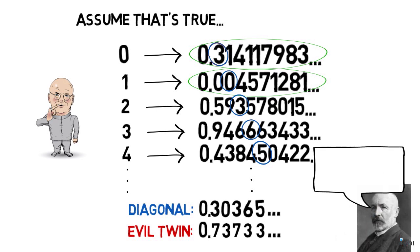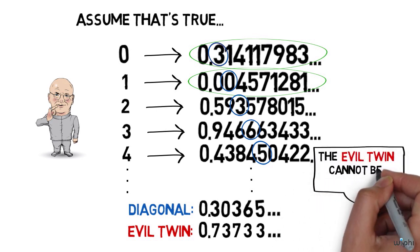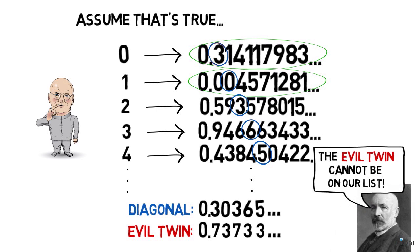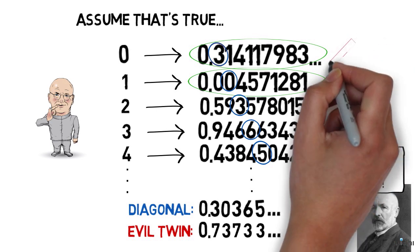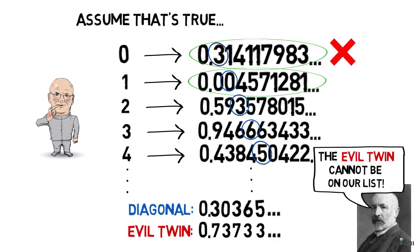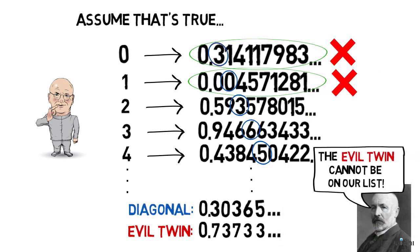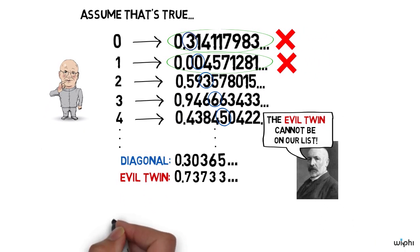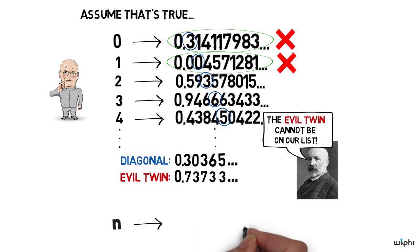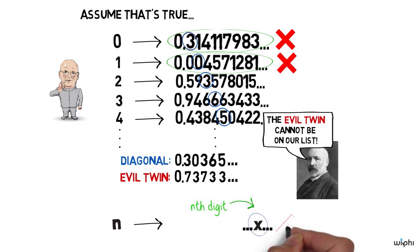Cantor's observation is that the evil twin cannot be on our list. Why can't it be on our list? It can't be the first member of our list because the first member has a 3 in its first position, but our evil number has a 7 in that position. It can't be the second one because the second one has something other than a 3 in its second position, and our evil number has a 3. And generally speaking, the evil number can't be in the nth position because whatever the number in the nth position has as its nth digit, the evil number will have something different.